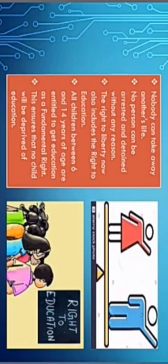The right to liberty also includes the right to education. All children who belong to the age group of 6 to 14 years are entitled to get education — this is a fundamental right that each and every child gets. The right to education ensures that no child will be deprived of the brightness of education. All children aged 6 to 14 years should compulsorily get primary or basic education.